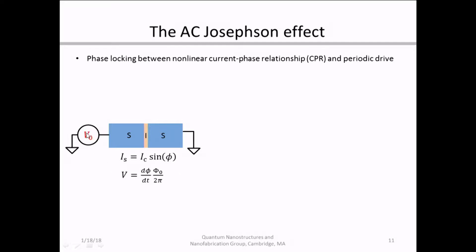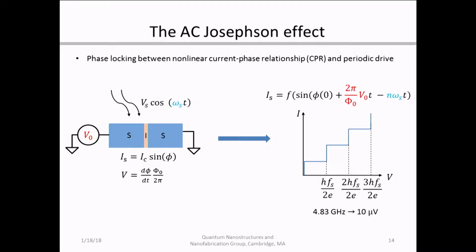When I apply an AC voltage drive over that DC bias, the overall voltage now becomes time dependent — a combination of both the DC drive and the AC drive. Going through the constitutive equations, the supercurrent through the device is now a function of both the DC voltage and the AC voltage, contributing two time-dependent terms. Because these terms are of opposite sign, when they're equal, the time dependence of the supercurrent is completely cancelled out and you're left with just a DC supercurrent.